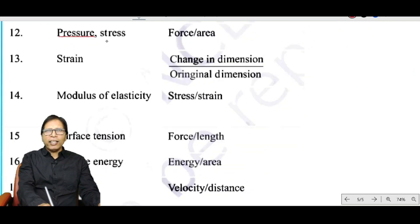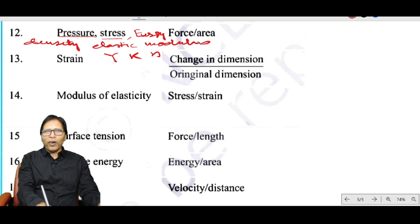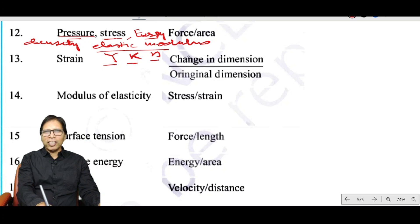Pressure, stress, energy density, elastic modulus, Young's modulus, bulk modulus, and modulus of rigidity all have the same dimension. This is derived from force divided by area: force is MLT⁻² and area is L², giving the dimensional formula ML⁻¹T⁻².